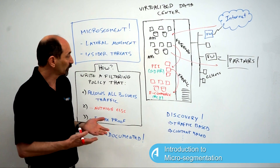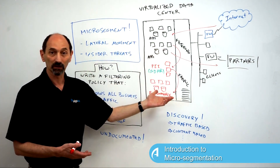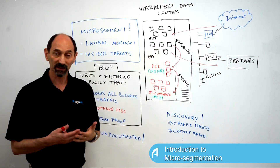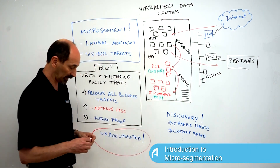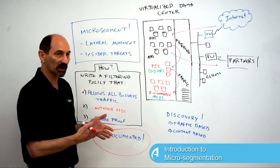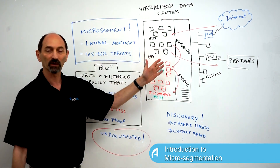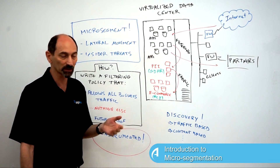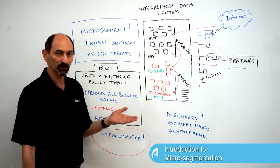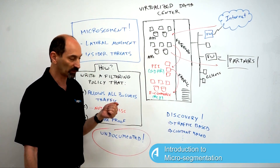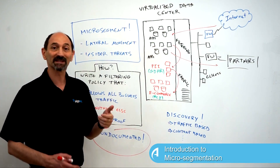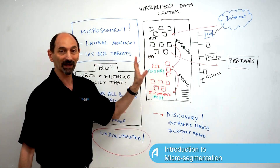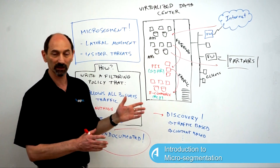To do that, you first need to know what all these flows are — what traffic is going through the data center that needs to be allowed. This is not very easy to discover because in many organizations, this information is really undocumented. There is no clear record of exactly what applications are functioning in the data center and what network flows they depend on. Maybe you have some partial records, some information, but in general this is information that's very difficult to get accurately. So you need to run a discovery process, find out what you need to allow, and then from that decide what not to allow.